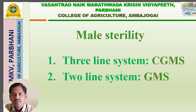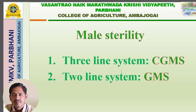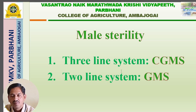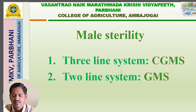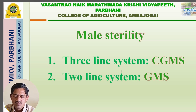What type of male sterility can we utilize in hybrid seed production? There are two methods to produce hybrid seeds using male sterility: the three-line system and the two-line system.